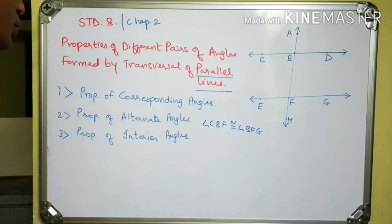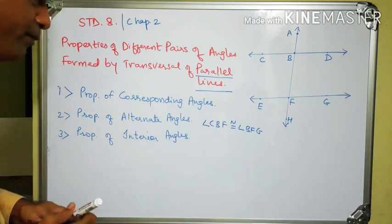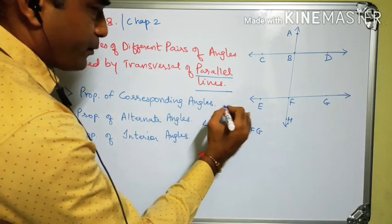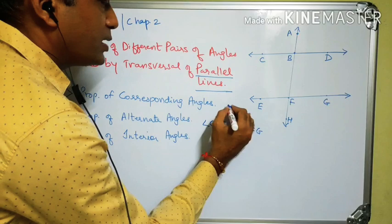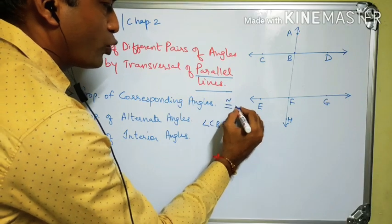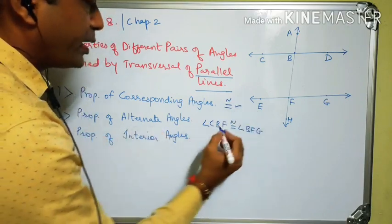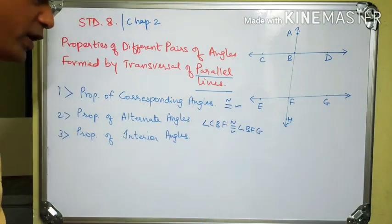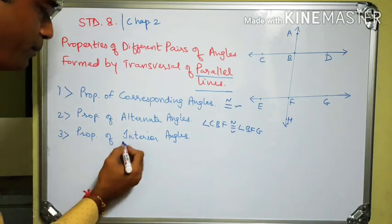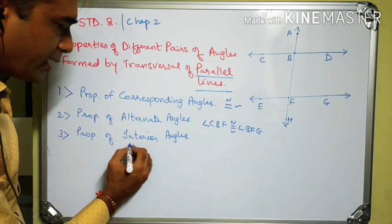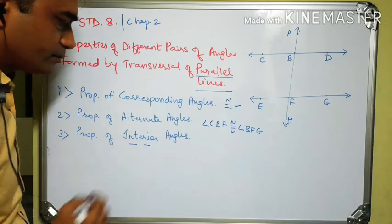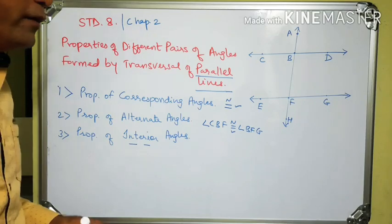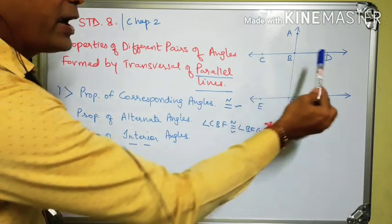So in summary: pairs of corresponding angles are congruent, and pairs of alternate angles are also congruent. Now the third property: the property of interior angles. Which are the pairs of interior angles? Angle DBF and angle BFG.